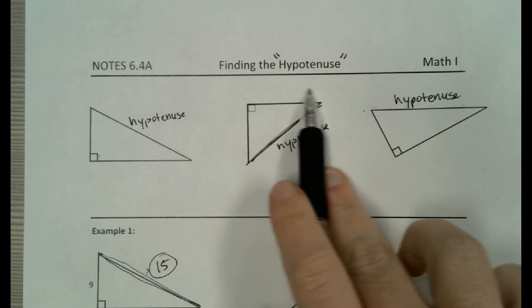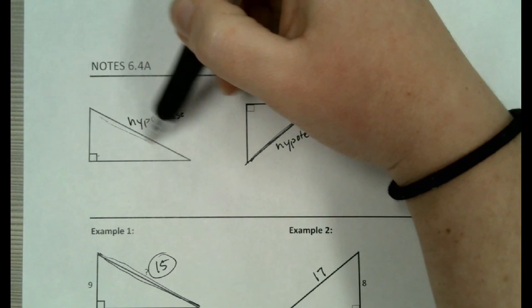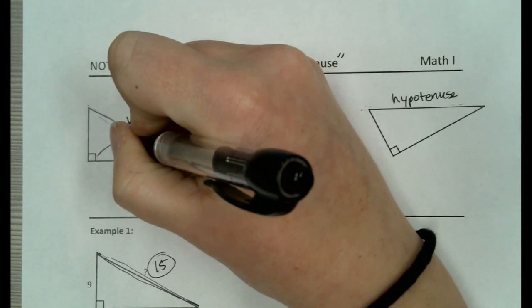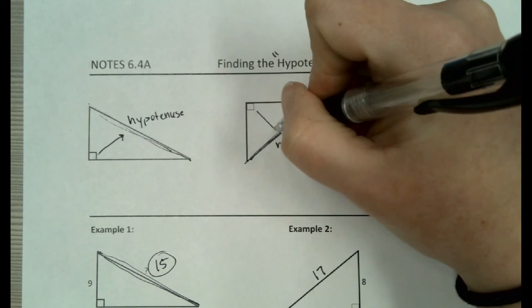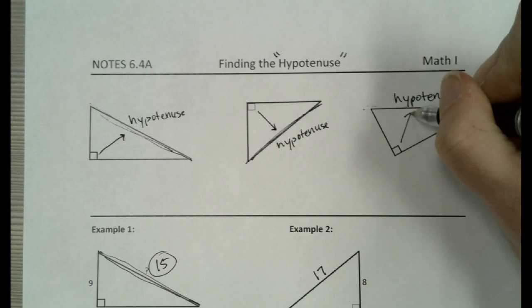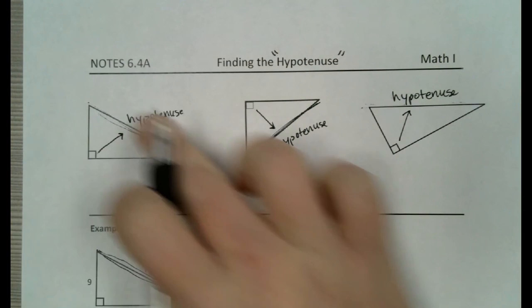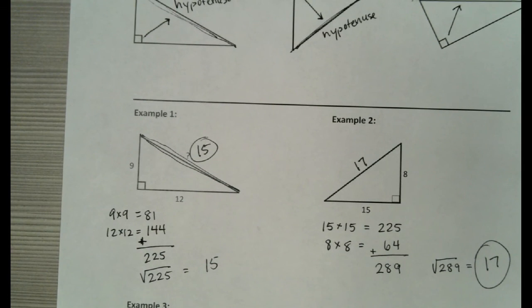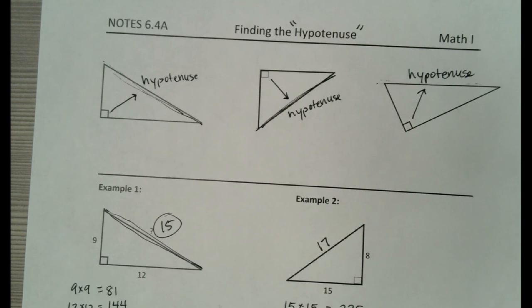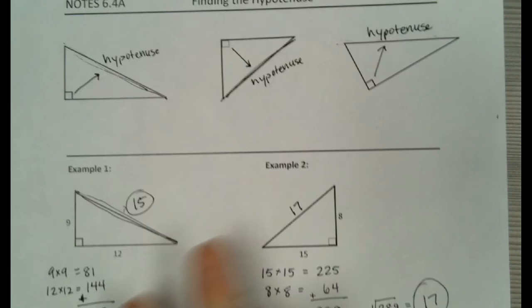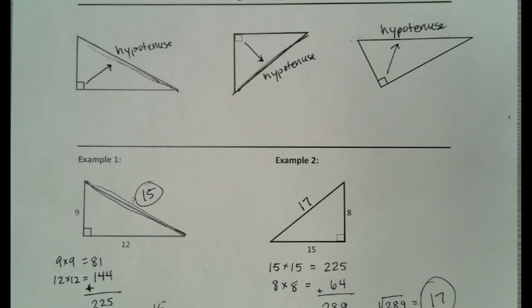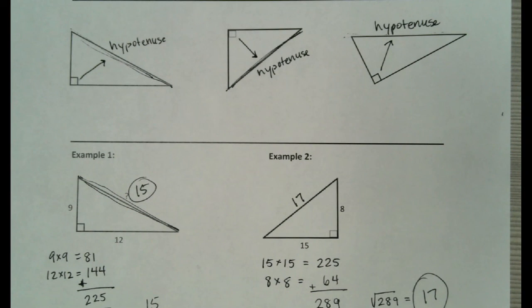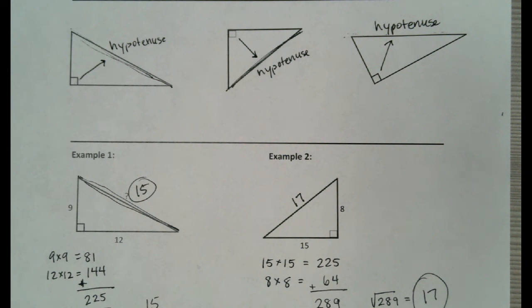This is called finding the hypotenuse. The hypotenuse is the side that is always across from the right angle. Right now that's all we're looking at — finding the hypotenuse using this numerical method. What I have for you guys to do is a Kahoot, just practicing this numerical method. If you have any questions, let me know. Tomorrow we're going to extend on this, but this is the foundation.